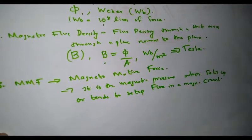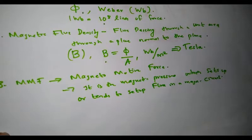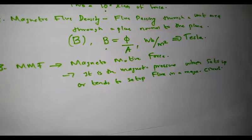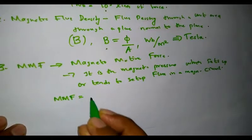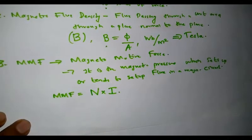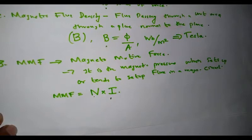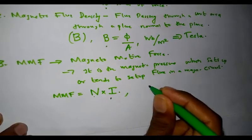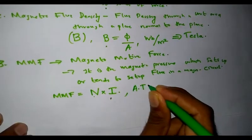Magnetomotive force is a magnetic pressure which is set up or tends to set up flux in a magnetic circuit. It can also be defined as the work done in moving a unit magnetic pole once around the magnetic circuit, similar to EMF. MMF is given by the equation: MMF equals the product of current I and the number of turns N of a coil. The product N times I gives the total MMF provided by that coil. Its unit is ampere-turns, abbreviated At.